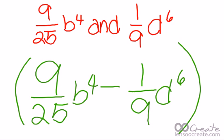And there it is. Our final answer is 9 twenty-fifths b to the 4th power minus 1 ninth d to the 6th power.